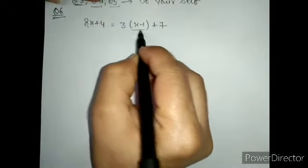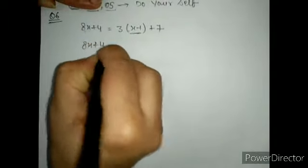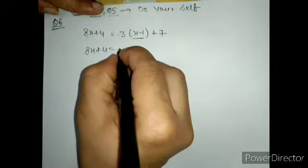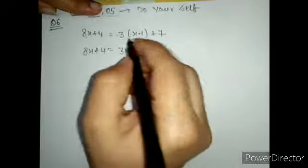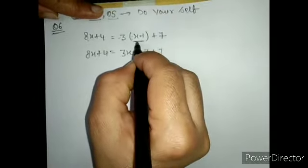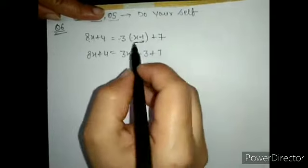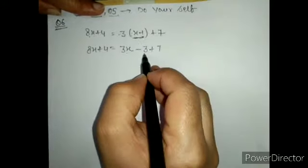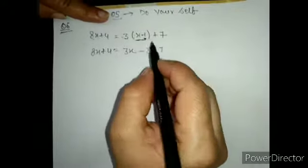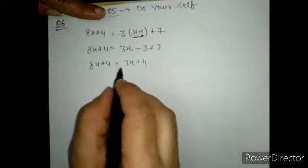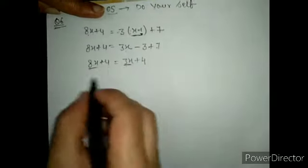Now come to question number 6. Given: 8x plus 4 equals 3(x minus 1) plus 7. First we will open the bracket. The sign outside is plus, so positive times positive stays positive, and positive times negative stays negative. Multiply 3 with x to get 3x, and also multiply 3 with 1 — most students make this mistake: don't forget to multiply 3 with 1 also. So this gives 8x plus 4 equals 3x minus 3 plus 7, which simplifies to 8x plus 4 equals 3x plus 4. Now 8x and 3x are like terms.